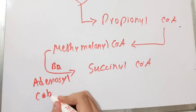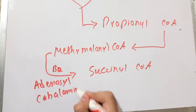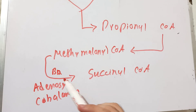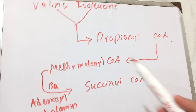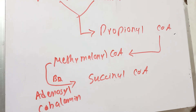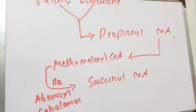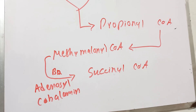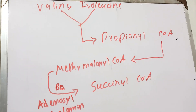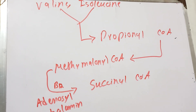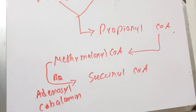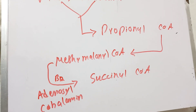If vitamin B12 is deficient, branched-chain amino acid metabolism is impaired, and these amino acids start accumulating, particularly in neuronal membranes. This leads to the manifestation of peripheral neuropathy — tingling of the hands and fingers, and numbness of the hands and feet. This is the clinical application of the metabolism of isoleucine and valine.